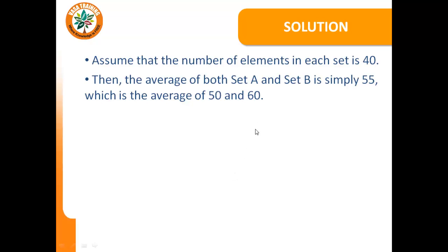The average of both set A and set B, if we assume that each set has 40 elements, is simply 55, which is the average of 50 and 60. Since they have equal number of elements, we simply take the average of their averages, and that gives 55.